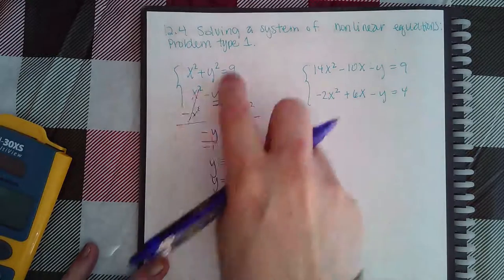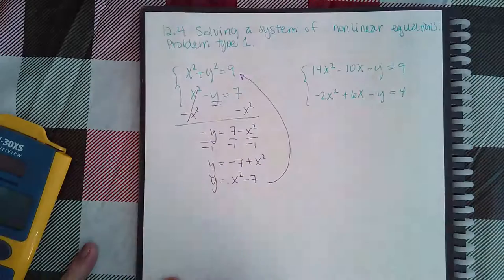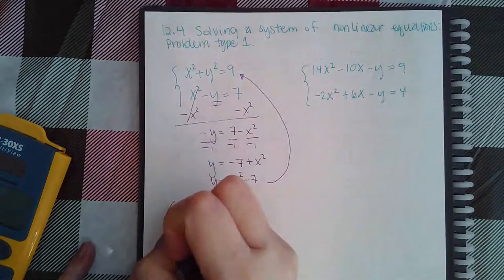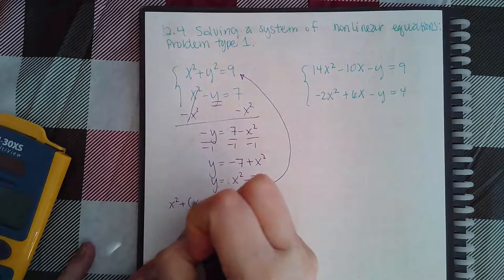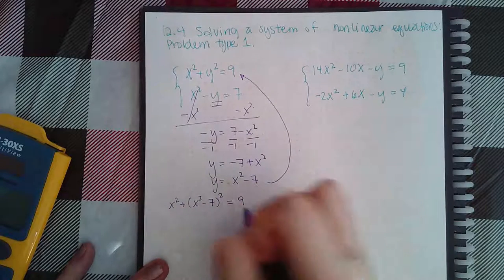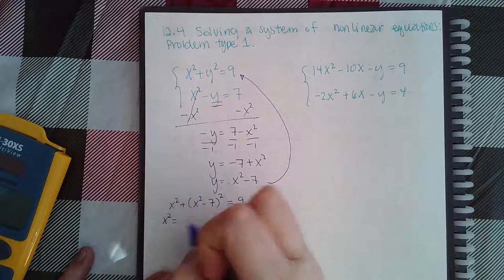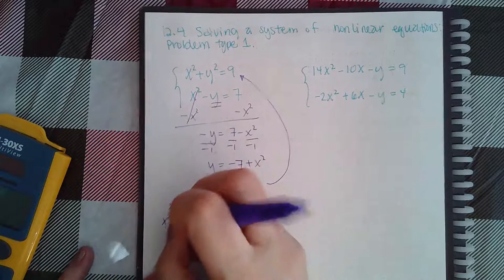Now we're going to use this to put into the other equation that I haven't messed with. We're going to have x² plus (x² minus 7)² equal to 9. Because of the square here I'm going to have to actually foil that out.